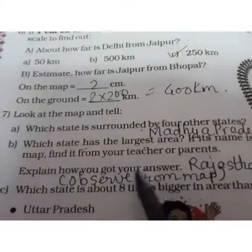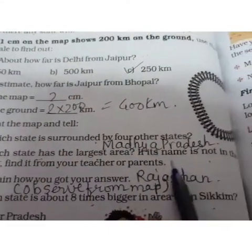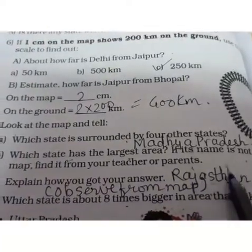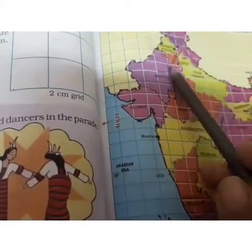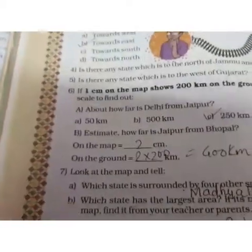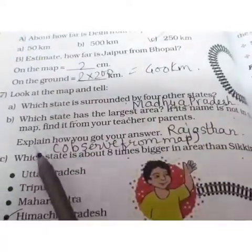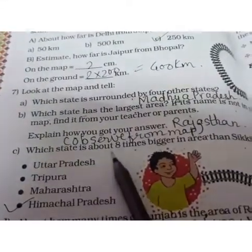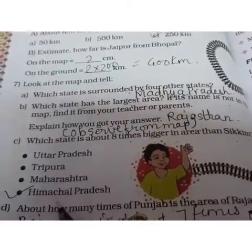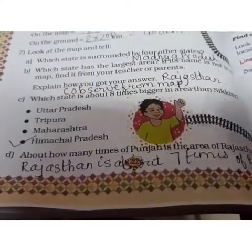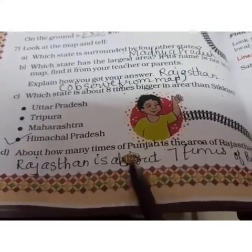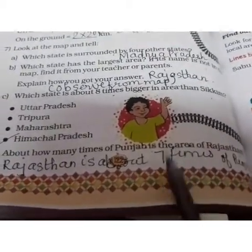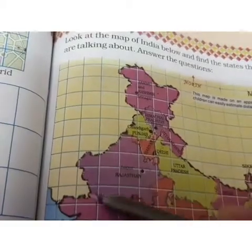Madhya Pradesh is the state surrounded by four other states. Which state has the largest area? By observation, it is Rajasthan, which has the largest area — you can observe this directly from the map. Which state is about eight times bigger than Sikkim? It is Himachal Pradesh, since Sikkim is a very small state. About how many times is the area of Rajasthan compared to Punjab? Rajasthan is seven times the area of Punjab.